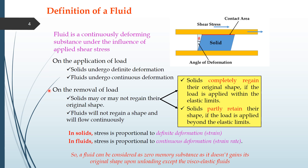Now we will talk about the basic definition of a fluid. A fluid is basically a continuously deforming substance under the influence of an applied shear stress. We have a figure to understand this. There is a fixed plate at the bottom and another plate at the top. We apply shear stress on this plate, and we can see there is some deformation — the solid has deformed by an angle theta. The red line is the contact area in contact with the moving plate.